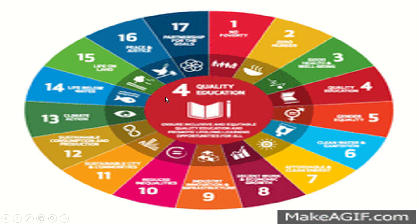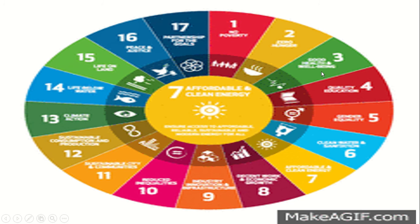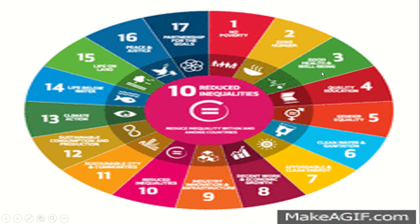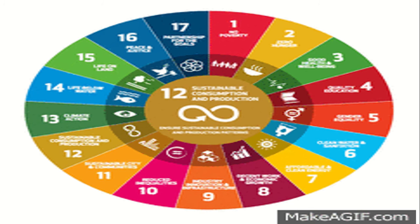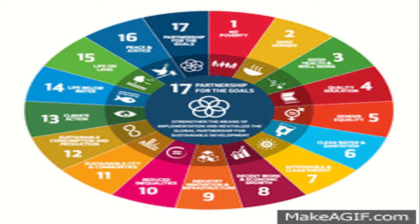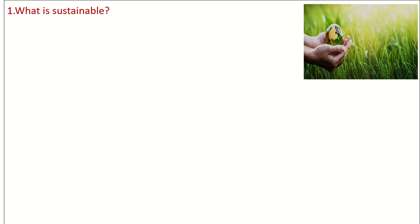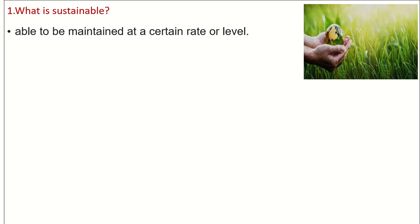By seeing this picture you can understand that our chapter name is SDG, or Sustainable Development Goals. First, what is 'sustainable'? Able to be maintained at a certain rate or level is called sustainable.